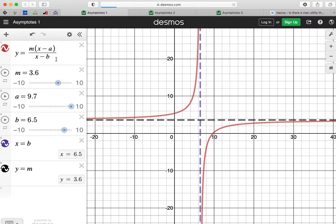And what we can see is that there's a vertical and a horizontal asymptote. And they're not on the axes. They're dependent on the values of a and b.